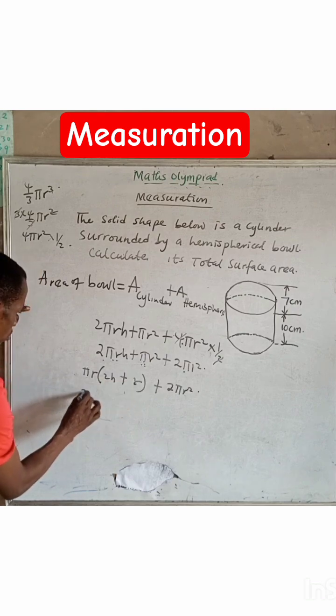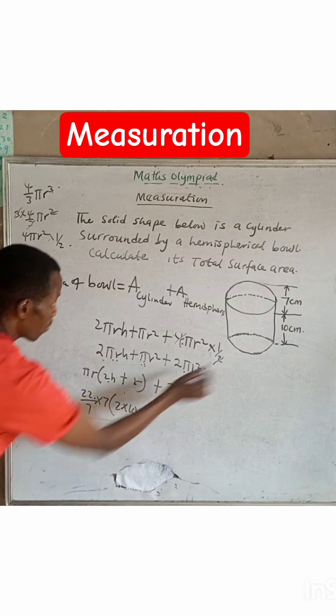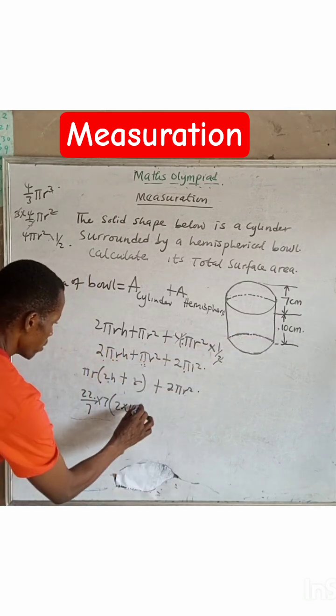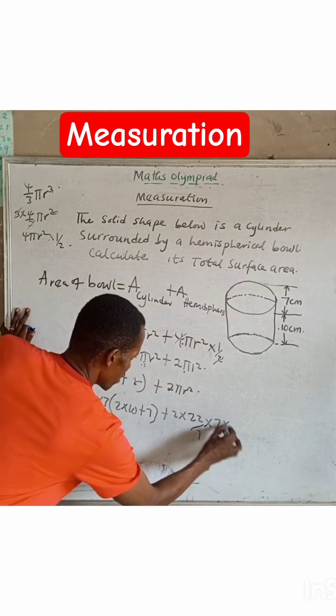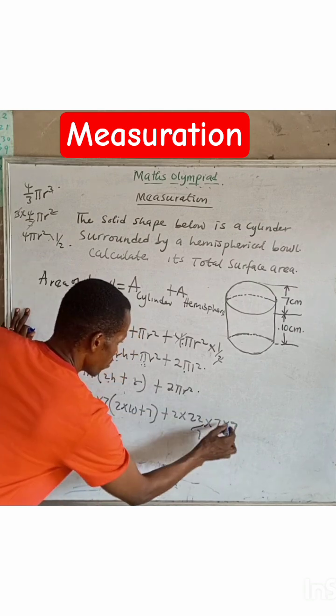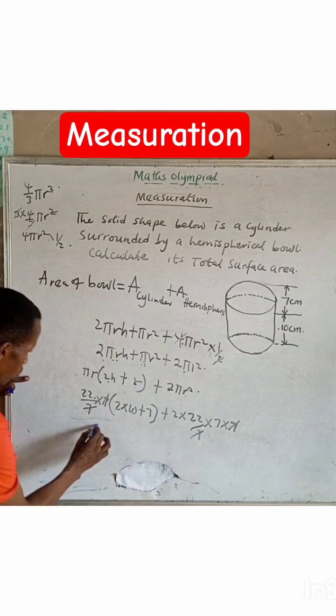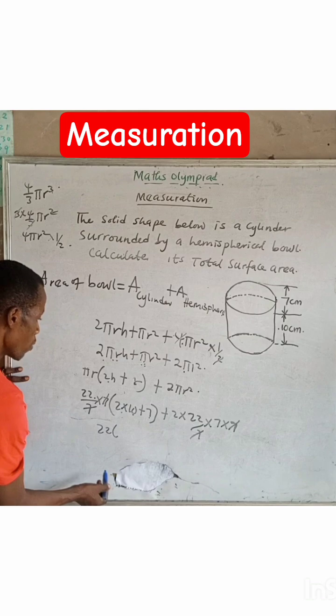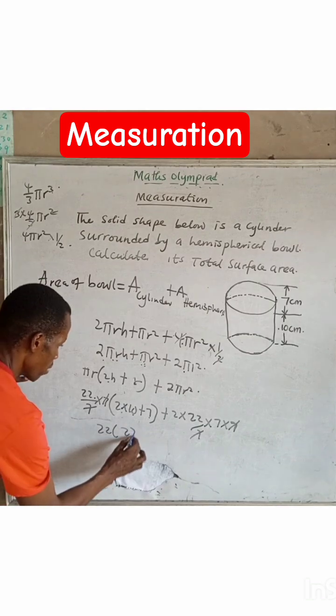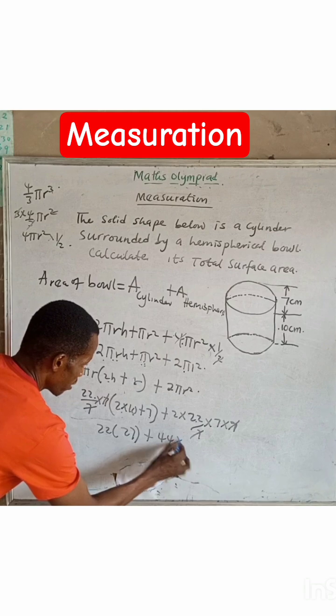So I'm going to give us 22 over 7 into 2 times 10. Our height is 10 plus here 7, and then 7 and 7. This is 7 r squared. So one, this one maintain, this now for here, this maintain this.